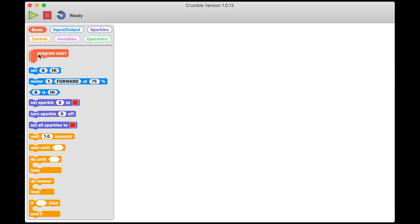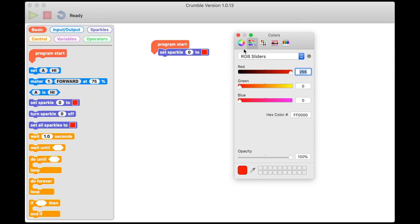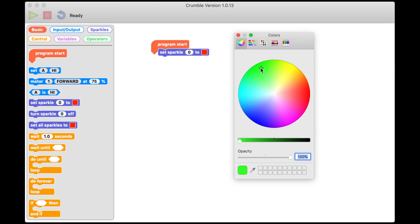I'm going to grab a program start block and you always need one of these to tell the Crumble where your program is starting. Then I'm going to grab this set sparkle block. It says set sparkle zero to and then there's a red box. The red box is the color I want the light to be. I click on that box I can change the color. I'm going to pick a nice greeny color.